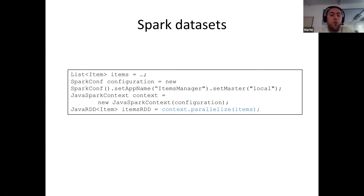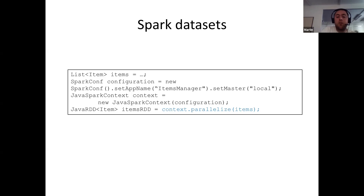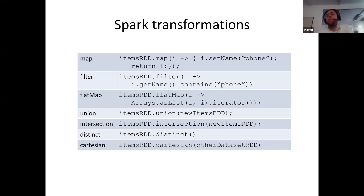To get started with Spark, assume you have a simple list of items. You create a new Spark configuration using the SparkConf class, set a name for the application, specify where the master node resides, and how many threads to use. Then you create a JavaSparkContext based on that configuration, and from that context you convert a list of items to a Spark RDD — that's the basic way to convert an existing Java list to a Spark dataset.